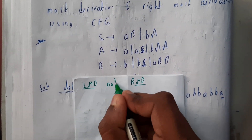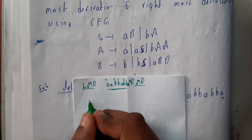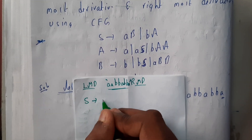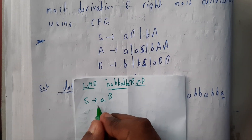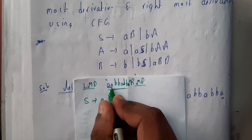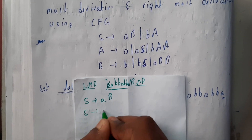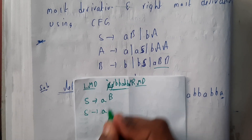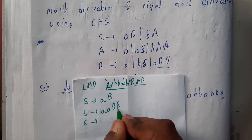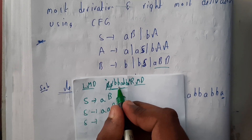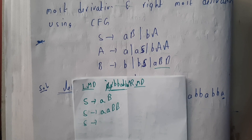We need 'aabbabba'. Initially we start with S, and the first symbol we need is 'a', so we take production S → AB. Now we need to replace B. We need two a's initially — one 'a' is already done. S tends to A, and we take the production to get 'aab', since we need 'aabb' at the start.